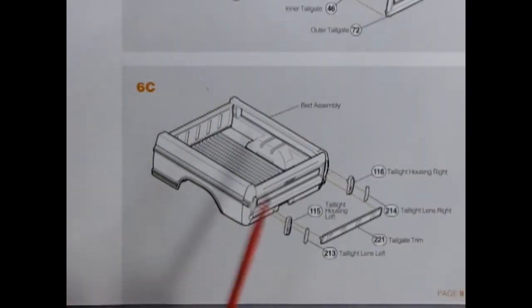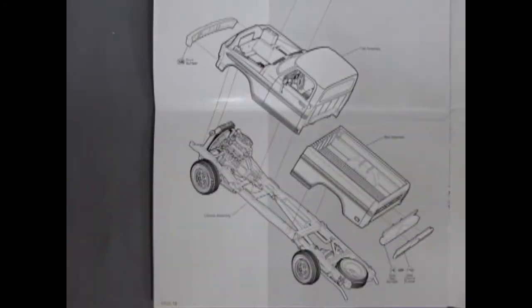Then we complete our bed assembly by attaching the tail light housing and the tail light lenses and our rear bumper. Finally all our completed components attach to the chassis.